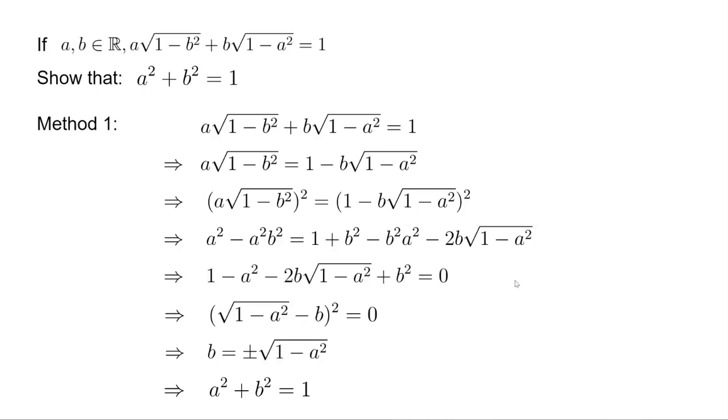Now, we have another way to solve this problem. This is a common technique. Whenever we see square root of 1 minus the square of a variable, we try to replace the original variable with sine and cosine functions.